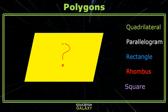So what names can I give this polygon? It has four sides, so it's a quadrilateral. Both sets of opposite sides are parallel, so it's a parallelogram.